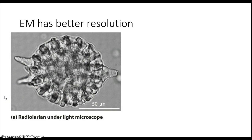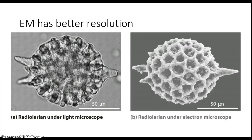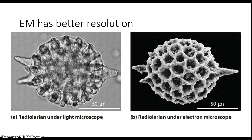A radiolarian is a freshwater organism that builds a shell around itself. Although this organism is relatively large and can be seen with a light microscope, you can't see that much detail with a light microscope, but with an electron microscope, you can see details of the shell that are simply not apparent otherwise.